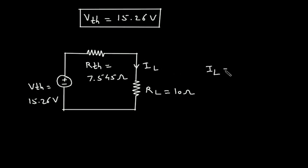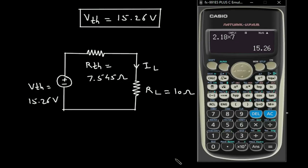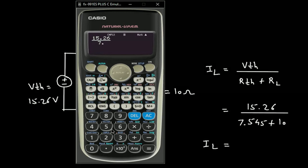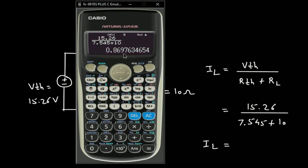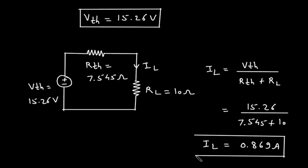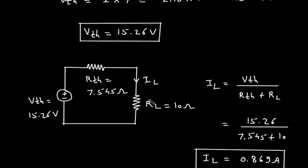Now we can find IL using the formula: IL is equal to VTH divided by RTH plus RL. VTH is 15.26, divided by RTH 7.545 plus 10. Therefore IL is equal to 15.26 divided by 17.545, which is 0.869 ampere. So 0.869 ampere is the value of IL, that is the current flowing through this 10 ohm resistor.